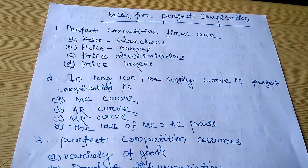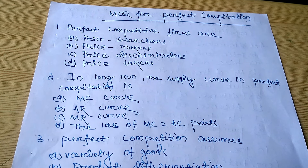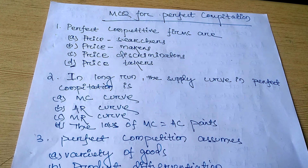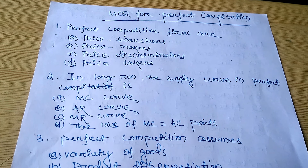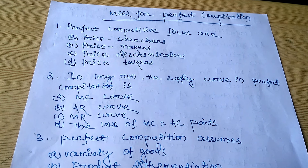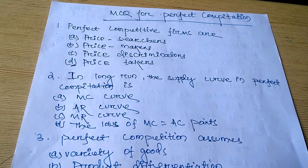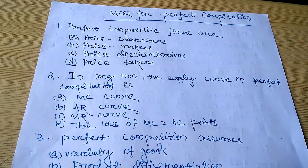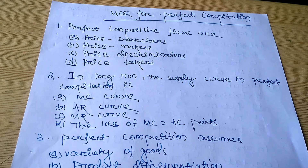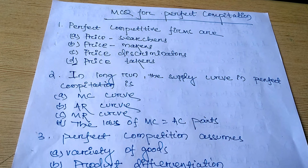There are free entry and free exit. Firms can earn supernormal profit, normal profit, or losses in the short run, but they generally earn normal profit in the long run. Perfect competition is a hypothetical situation — it is an imaginary situation which we consider to be an ideal situation. But according to UGC NET, the example for perfect competition is food grain.